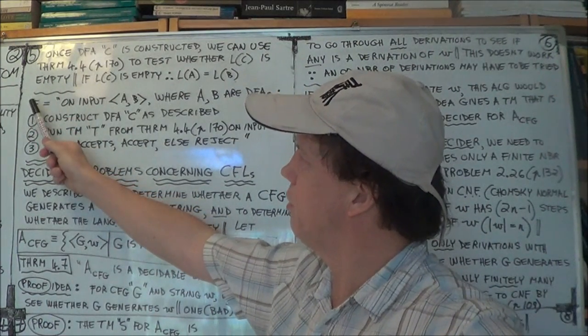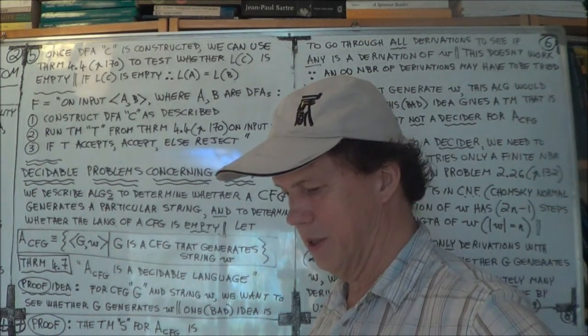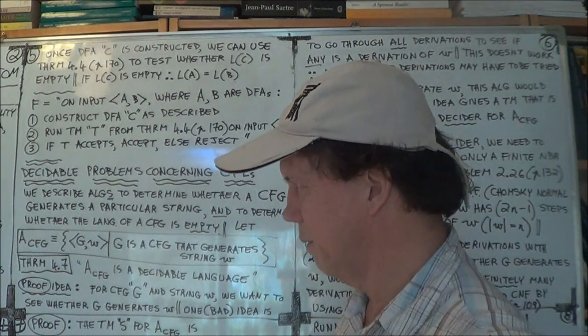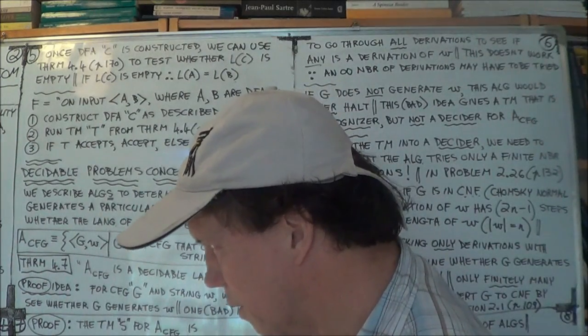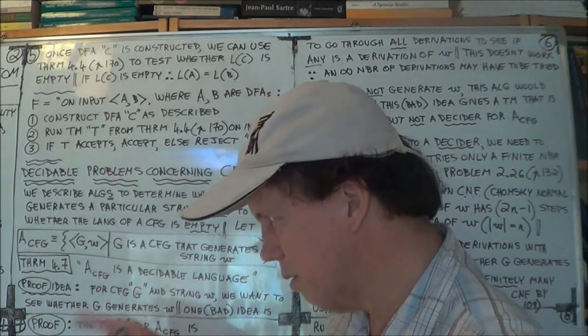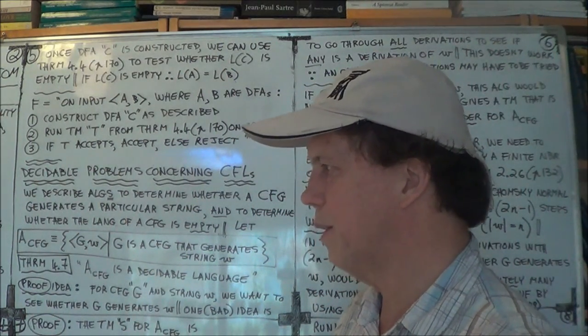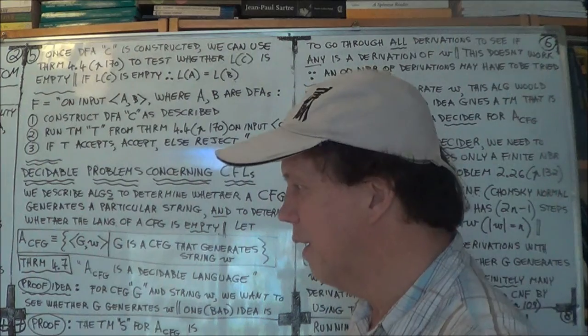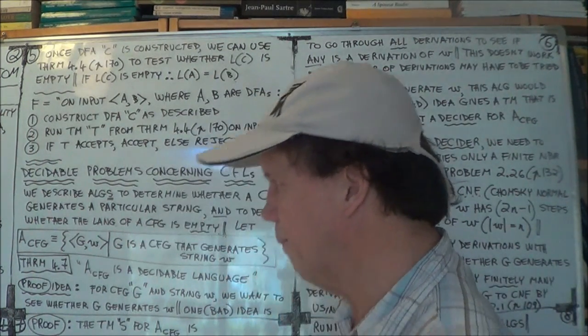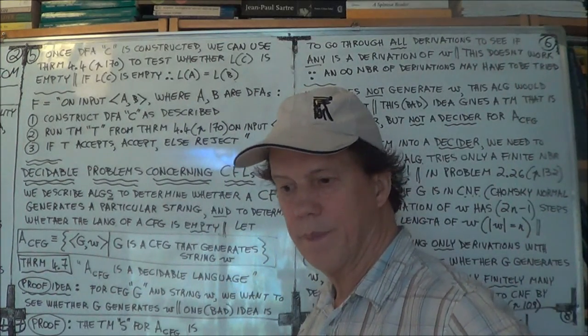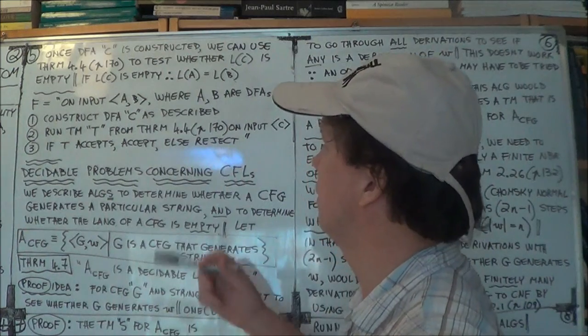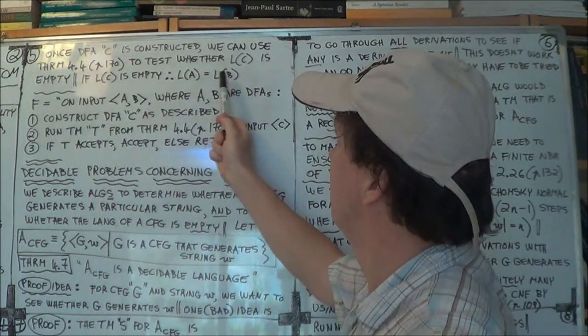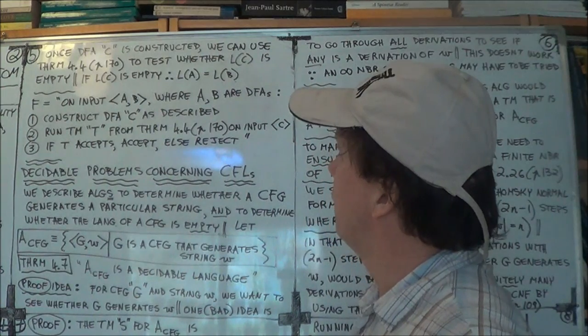So we're going to create a Turing machine F, and we'll show that the language is decidable, which is EQ suffix DFA. So we'll find a Turing machine that decides that language, and hence indirectly enable us to show if these two languages are the same, and hence if these two DFAs are equivalent, A and B.